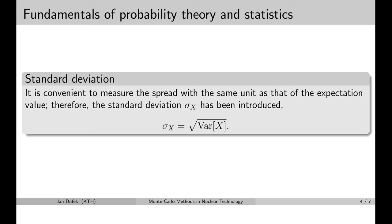You may have noticed that the expectation value of a random variable and its variance have different units. We use the variance to express the amount of spread in the random variable around its expectation value, and we want to measure this spread in the same units as the expectation value. For this reason we also define the so-called standard deviation, which is simply the square root of the variance. The standard deviation, denoted by sigma, has the same units as the random variable and its expectation value, so we often use this one.